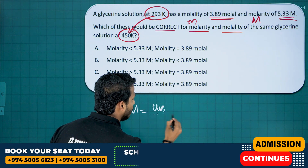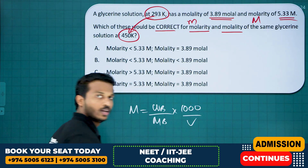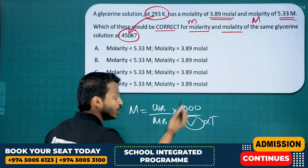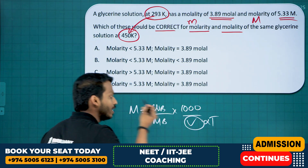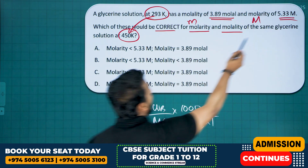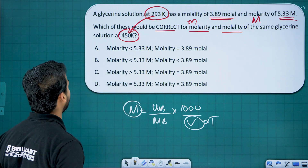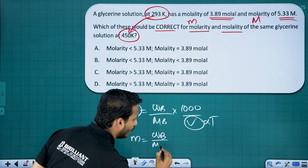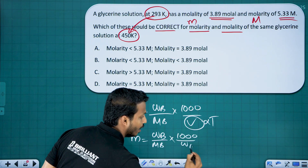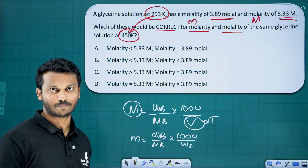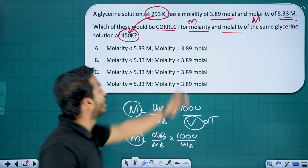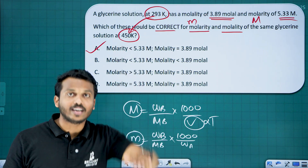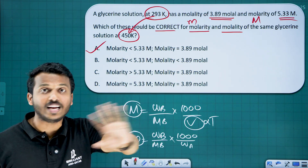Molarity = WB / MB × 1000 / volume. Molarity depends on temperature because it contains the volume term. Temperature is directly proportional to volume — as temperature increases, volume increases, so molarity decreases. So if initial molarity is 5.33, it should be less than 5.33. But molality = WB / MB × 1000 / WA — there is no volume term, so molality is independent of temperature. Its value remains 3.89. Option A is the answer.